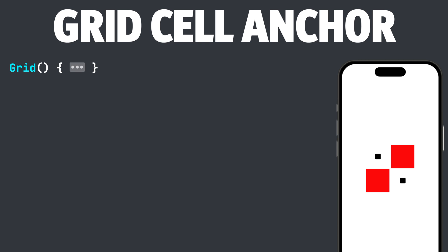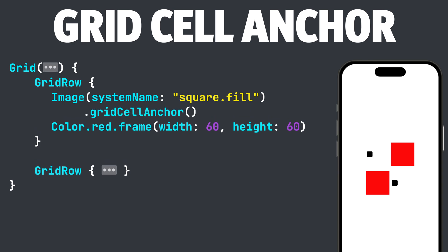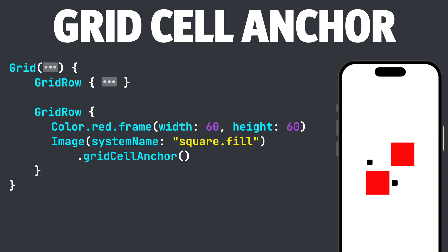Currently, our grid alignment defaults to .center, but let's change the alignment to .leading. Next, let's add some padding by adding 10 pixels to both the horizontal and vertical spacing. Now, we can modify our SF Symbols to be anywhere inside of the cell by using the .gridCellAnchor modifier. Let's update the first SF Symbol with .gridCellAnchor set to .bottomLeading, and modify the second SF Symbol with .gridCellAnchor set to .topLeading. You will now see that both SF Symbols are positioned differently inside of the cell — one in the bottom leading and the second in the top leading portion. Neither SF Symbol kept the grid cell alignment because we were able to override it using the .gridCellAnchor modifier.